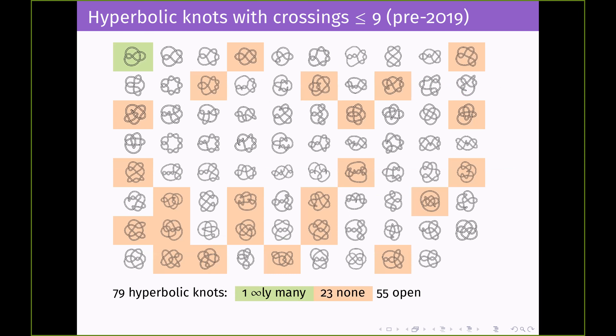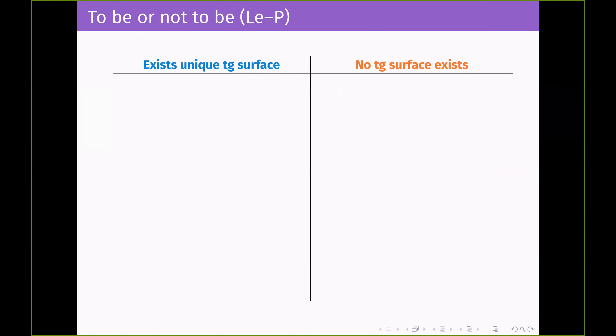As of 2019, this is what we knew about hyperbolic knots with small crossing numbers — at most nine — just pulled from Rolfsen's knot table in order. We have the one figure-eight knot that has infinitely many totally geodesic surfaces, and a smattering of knots that don't have any. Khan and I have been working on trying to expand and color in more of that chart by looking at both existence of totally geodesic surfaces, uniqueness, and absence.